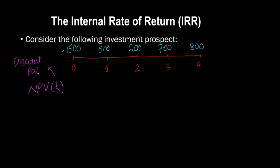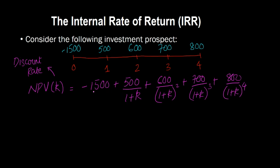What we're saying is that if you have an upfront investment of $1,500, then you compute NPV as: negative 1500, plus 500 divided by (1 + K), plus 600 divided by (1 + K) squared, plus 700 divided by (1 + K) cubed, plus 800 divided by (1 + K) to the power of 4. K could be any discount rate — 10%, 5%, 15%, 20%, whatever. Now we want to find that specific K which makes this entire equation equal to zero.